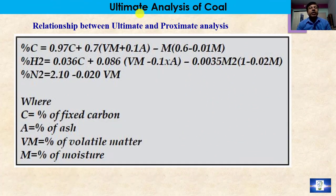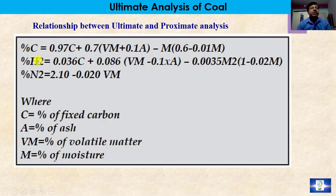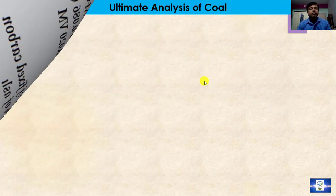If we have a proximate analysis report, then we can easily calculate the ultimate analysis report for carbon, hydrogen, and nitrogen percentage using the corresponding formula.